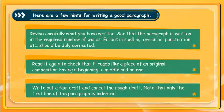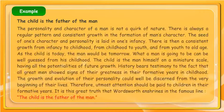Example: The child is the father of man. The personality and character of a man is not a quirk of nature. There is always a regular pattern and consistent growth in the formation of man's character. The seed of one's character and personality is laid in one's infancy. There is then a consistent growth from infancy to childhood, from childhood to youth, and from youth to old age.